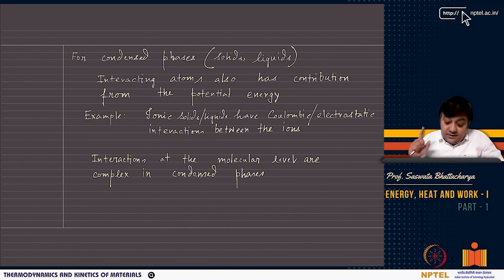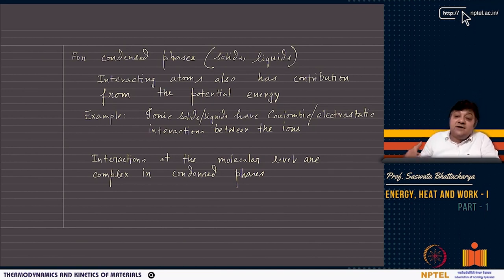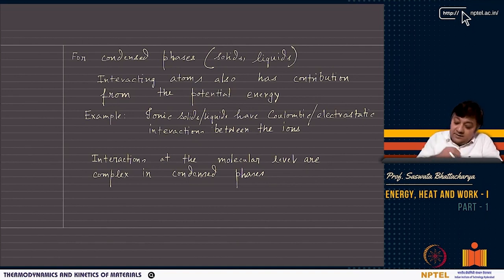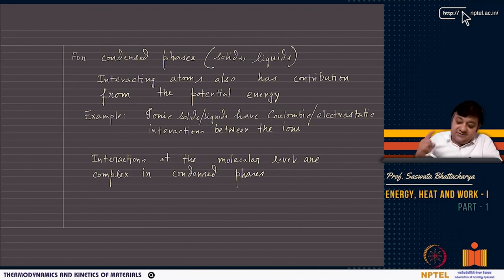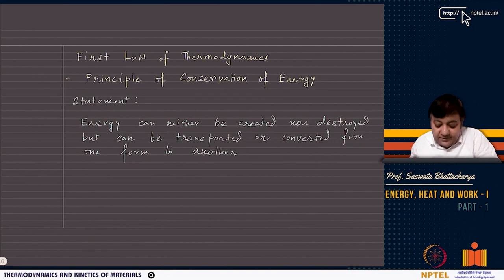For condensed phases — solids or liquids — the potential energy of interacting atoms always contributes to the internal energy. There are Coulombic interactions in ionic solids and metallic bonding in metals. However, interactions at the molecular level become very complex for condensed phases.